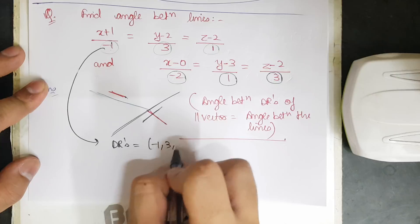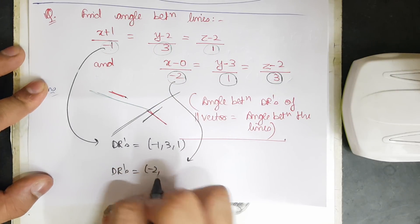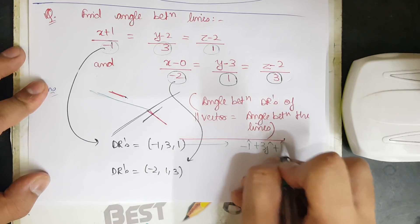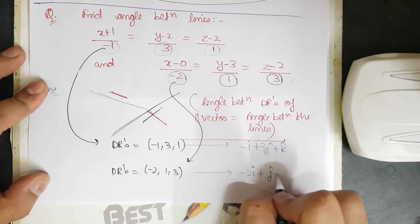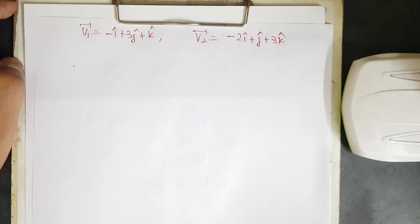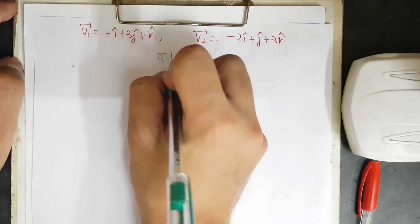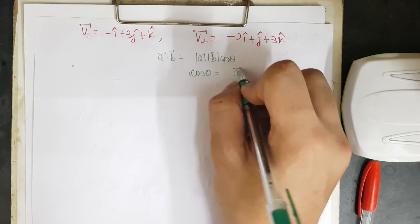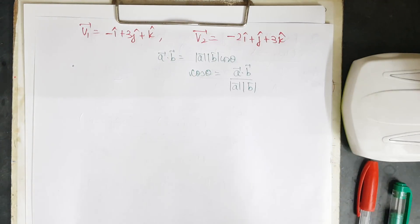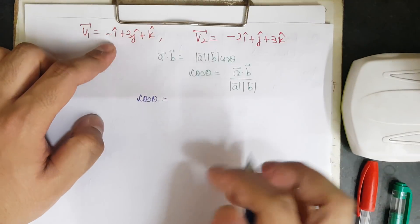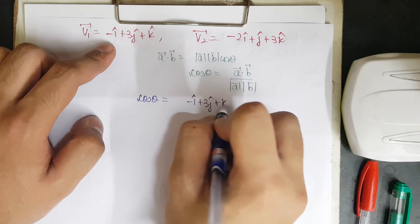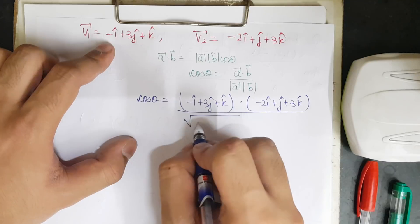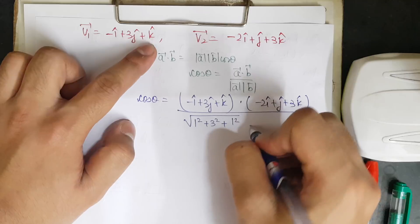The DRs of the first line are −1, 3, and 1; the DRs of the second line are −2, 1, and 3. Writing in vector form: v₁ = −î + 3ĵ + k̂ and v₂ = −2î + ĵ + 3k̂. The angle between two vectors is found using the dot product: cos θ = (a·b)/(|a||b|).